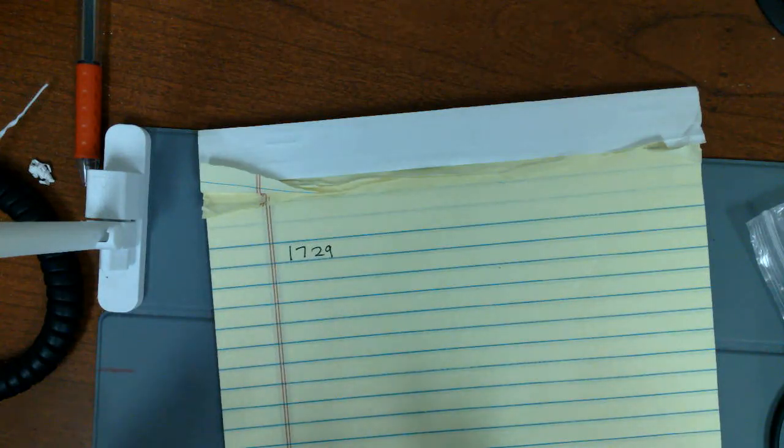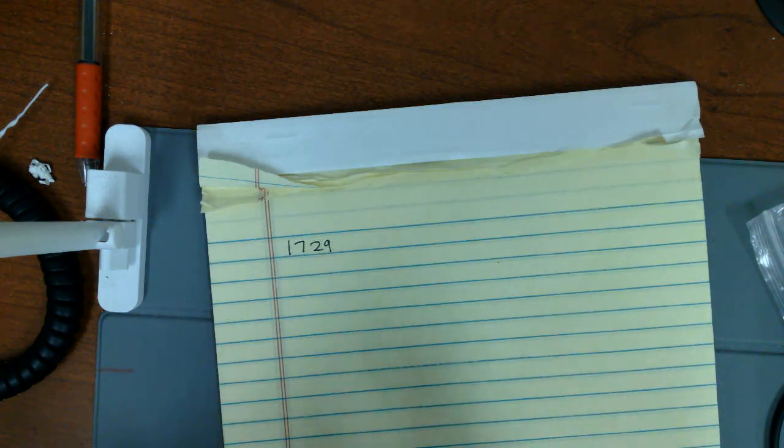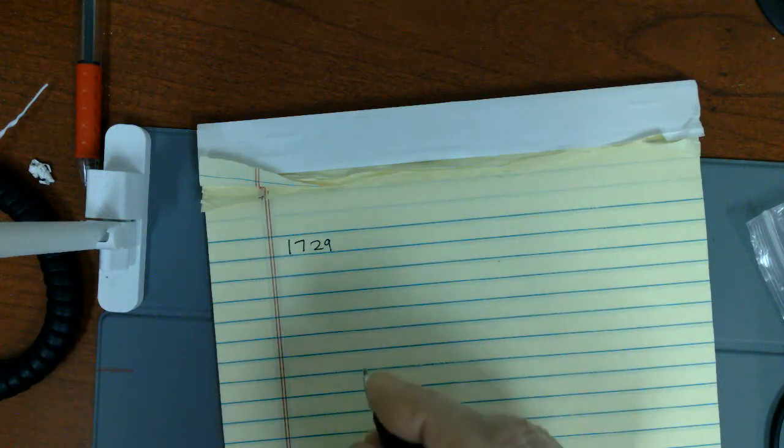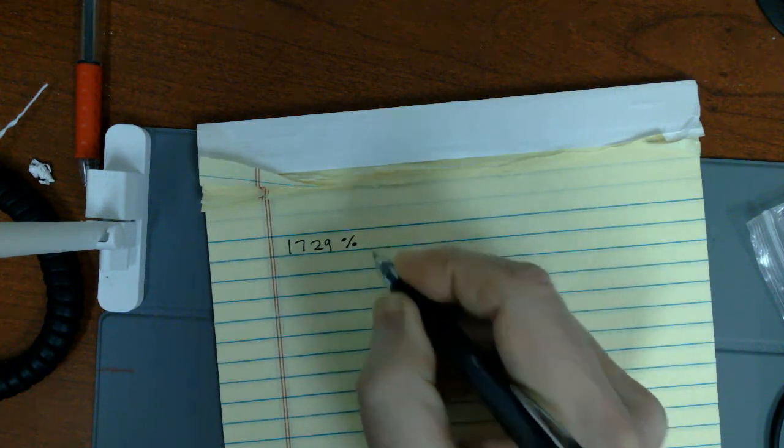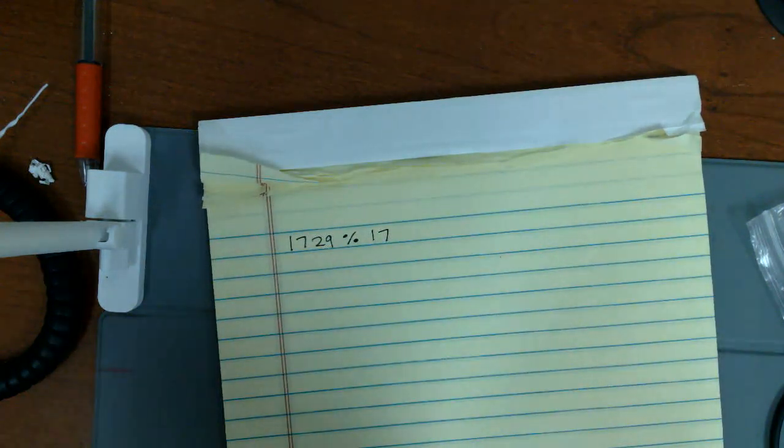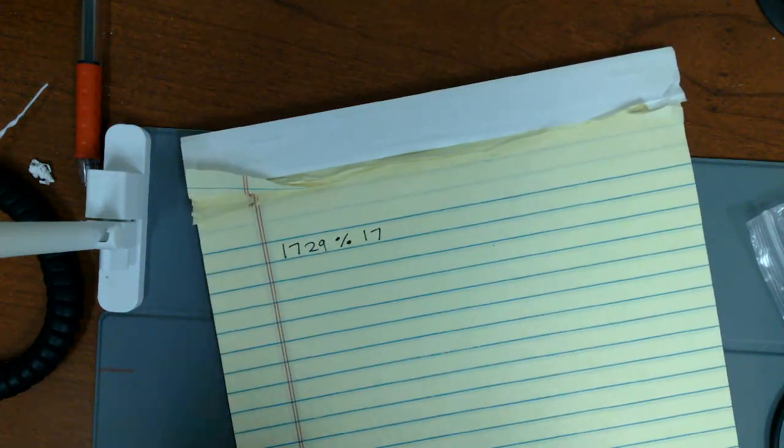I'm going to show you a simple example and you'll see how to, you'll see enough to show the wheels turn. I'm going to take my favorite number 1729 and I'm going to show you what its remainder is when divided by 17 without actually dividing it by 17.